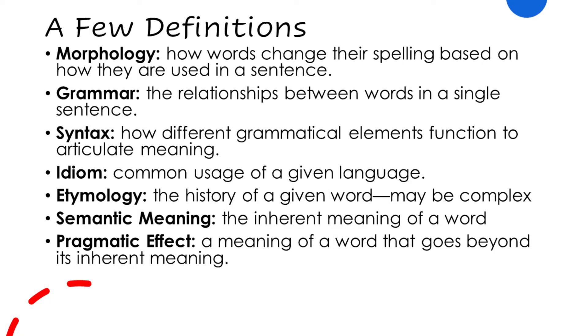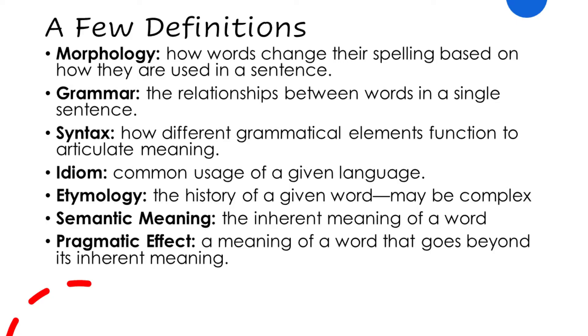Let's distinguish between several things. Morphology refers to how words change their spelling based on how they are used in a sentence. Related to morphology is grammar, which is the relationships between words in a single sentence — how nouns relate to adjectives and adverbs, and how verbs relate to adverbs, conjunctions, prepositions, and so on. Then we look at syntax, which refers to how the different grammatical elements are arranged in a hierarchy or ordered within a sentence to articulate meaning. Think about how prepositional phrases are subordinate to subjects and verbs, and how subordinating conjunctions and subordinate clauses relate to main or coordinate clauses. This is all syntax.